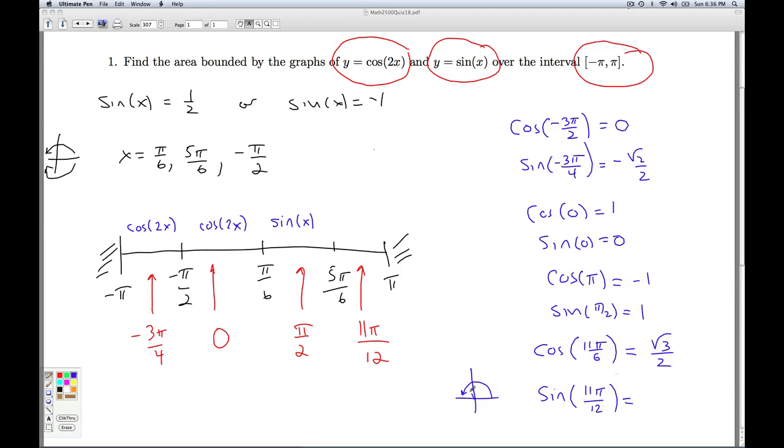The sine of 2 pi over 3 is square root 3 over 2. And anything beyond 2 pi over 3 down to pi is going to be something less than square root 3 over 2. So whatever this number is, it's going to be less than that, which means the cosine of 2x is what's on top again. So the cosine of 2x is on top on 3 of the 4 intervals.